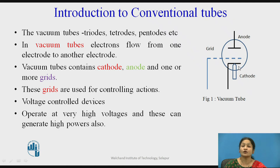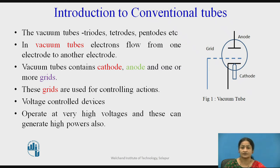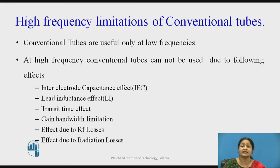To control the flow of electrons, there are one or more grids inserted. This is the equivalent circuit of the vacuum tube. These grids are used for the controlling action, so these devices are called voltage control devices and they are usually used at very high voltage and to generate high power. When you make use of these devices at high frequency, there come limitations known as high frequency limitations.